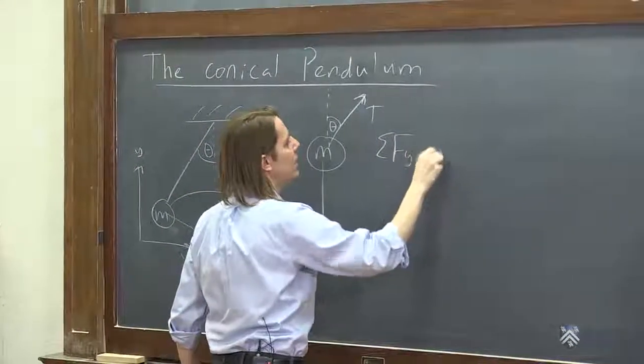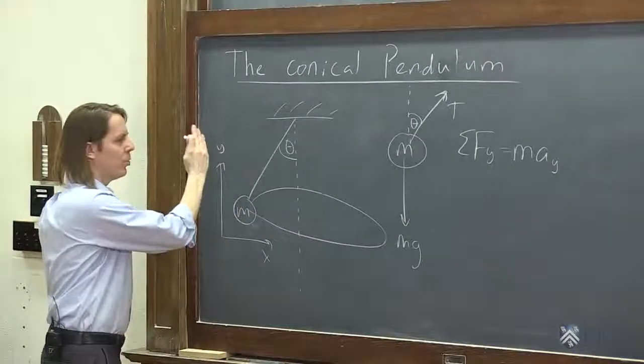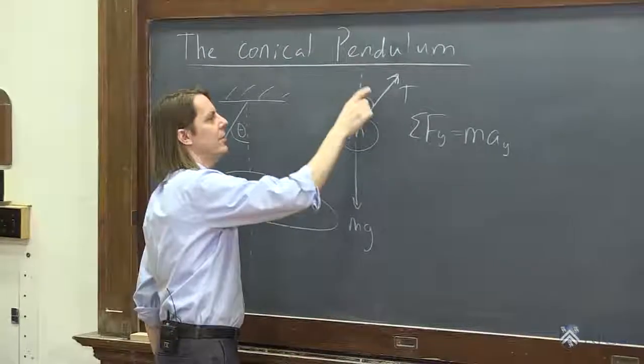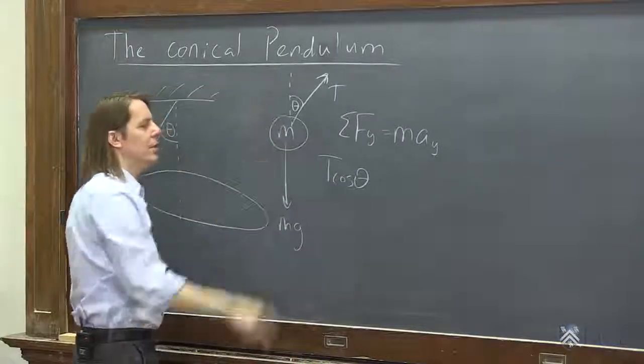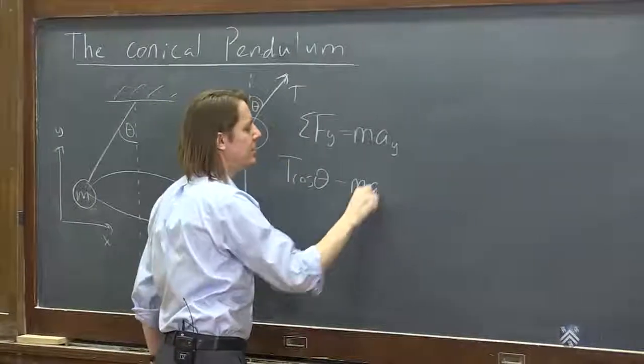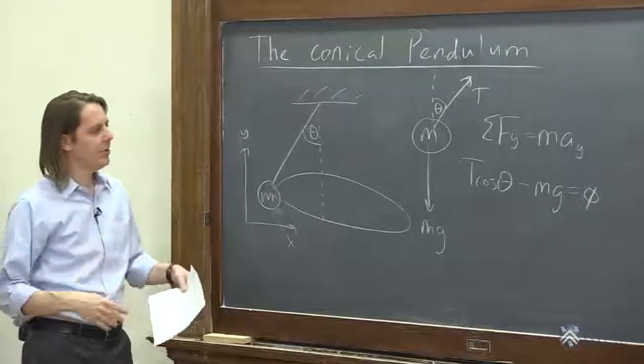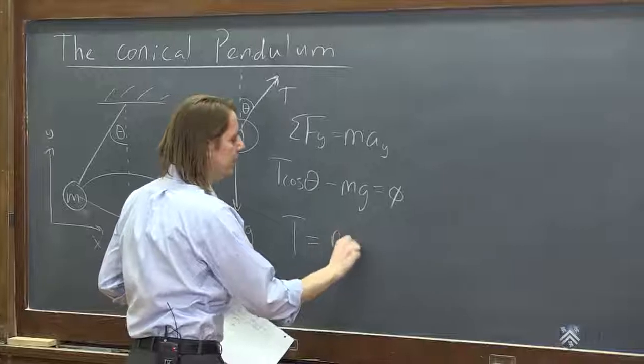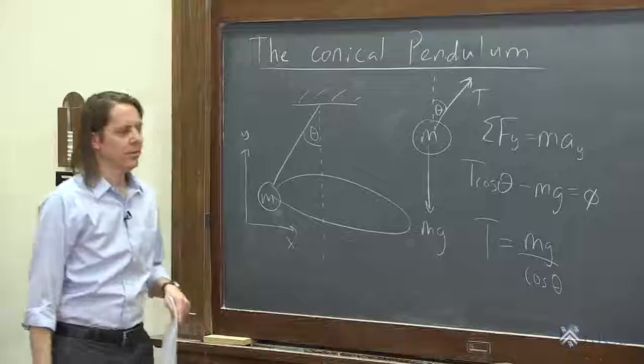Sum of the forces in the y equals the mass times acceleration in the y. And in the upward y direction, we have the vertical component of the tension, and that's the cosine. So T cosine theta is the Ty component minus mg, pulling it straight down, and that has to be equal to zero. So this lets you solve for the tension. The tension in the cord is mg over cosine theta.